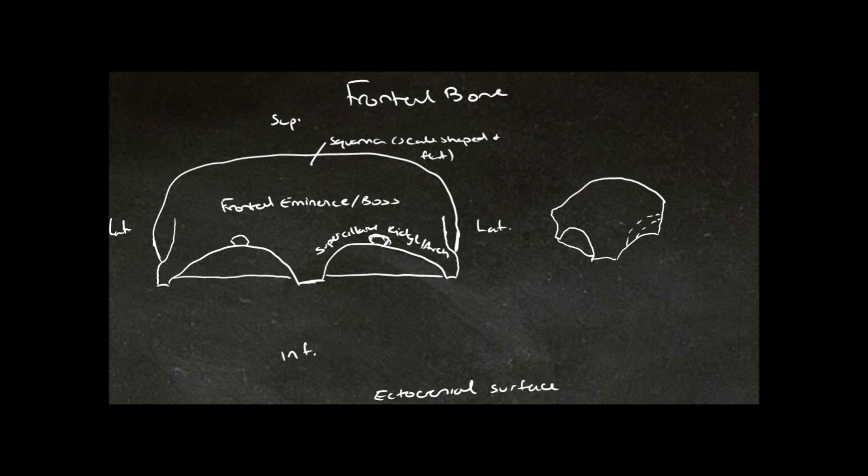You have a supraorbital foramen or supraorbital notch, and this is for the transmission of the supraorbital nerve as well as the supraorbital artery and vein. Around this region of the supraorbital foramen or notch is the supraorbital margin.